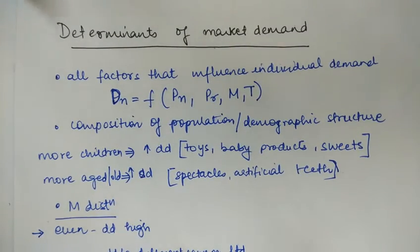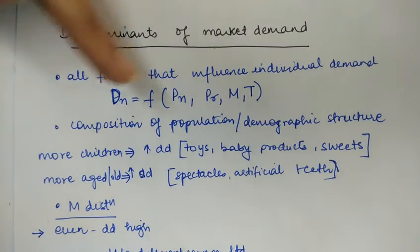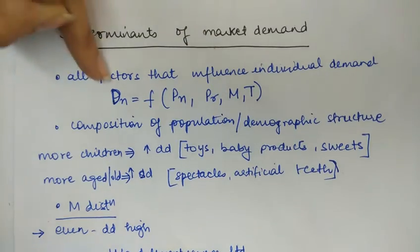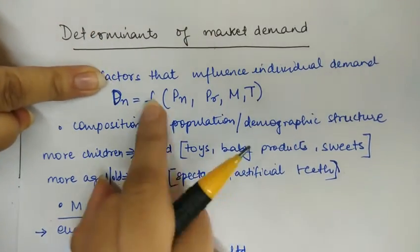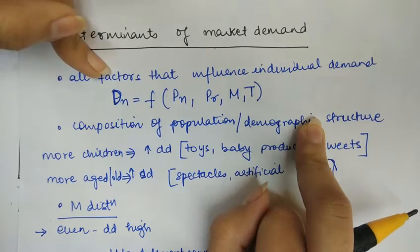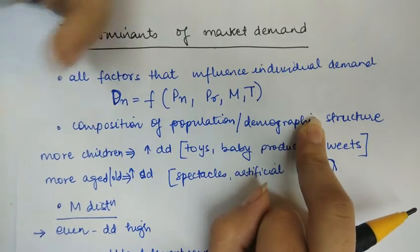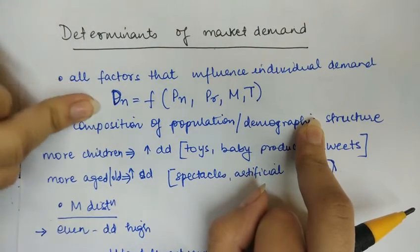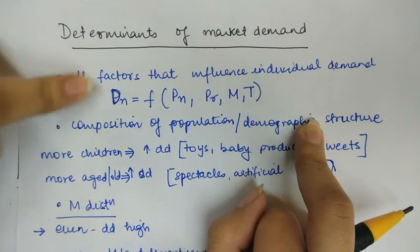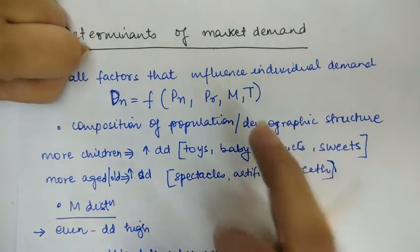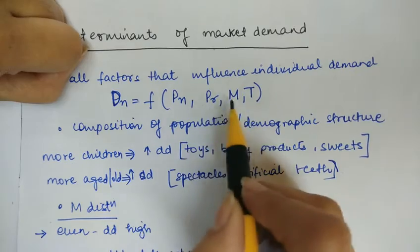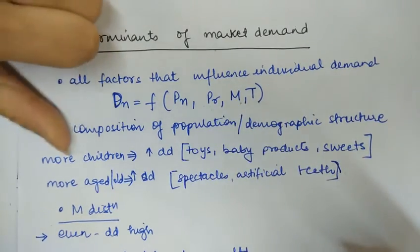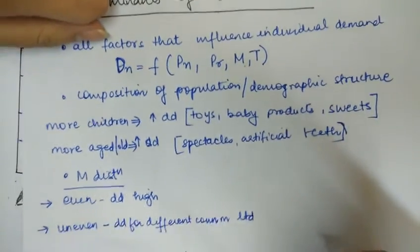The determinants of market demand include all factors that influence individual demand. All factors affecting individual demand impact market demand in the same way — such as price of the commodity, price of related goods, income, and taste and preferences of the consumer.